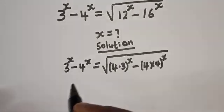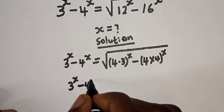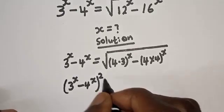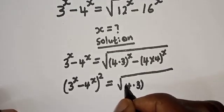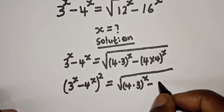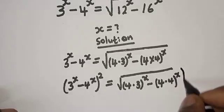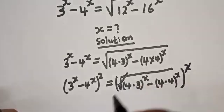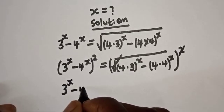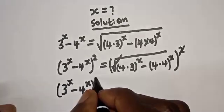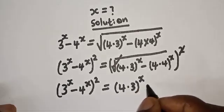Now let's square both sides of the equation. 3 raised to power s minus 4 raised to power s, squared, is equal to the square root of 4 multiplied by 3 raised to power s, all squared. This will cancel this. We have 3 raised to power s minus 4 raised to power s, squared, is equal to 4 multiplied by 3 raised to power s.